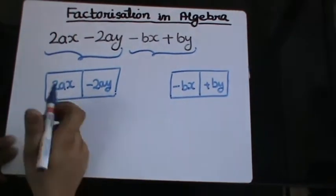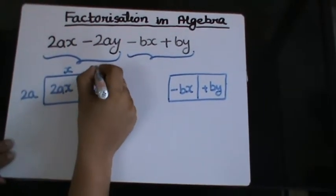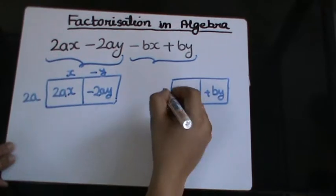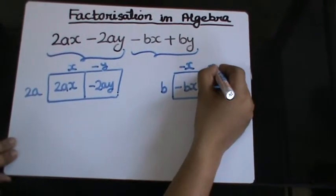Now in this two I have 2a common so I will be left with x minus y and here I have b common so I will be left with negative x plus y.